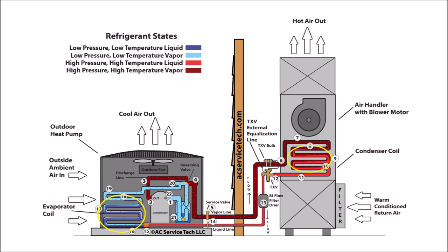Anytime you see two colors inside the tube at the same time — one being a liquid and one being a vapor — that means the refrigerant is in the saturated state. At step one, we have the low pressure, low temperature, superheated vapor entering the vapor compressor. At step two, we have the high pressure, high temperature, superheated vapor exiting. Remember that the compressor increases pressure, which therefore increases temperature. At step three, we have the high pressure, high temperature, superheated vapor traveling through the discharge line and heading towards the reversing valve.